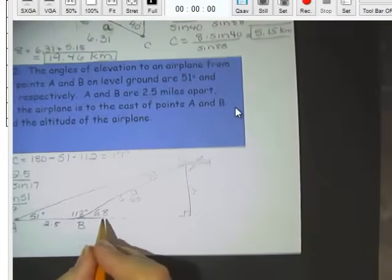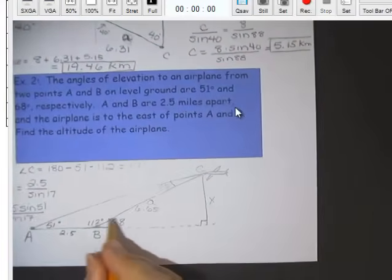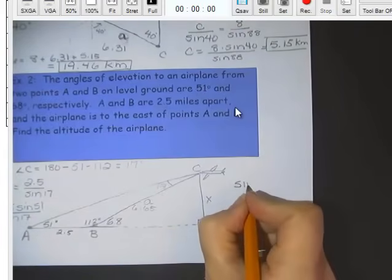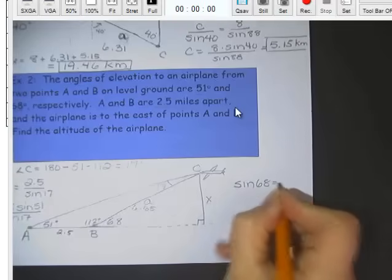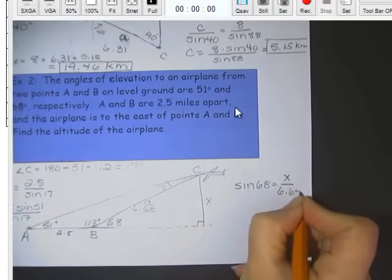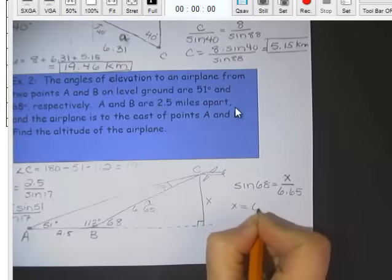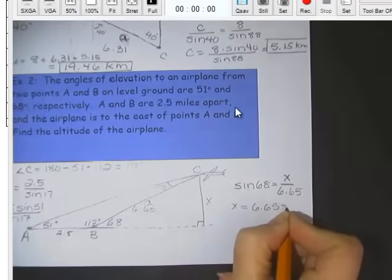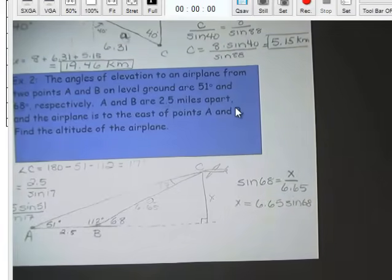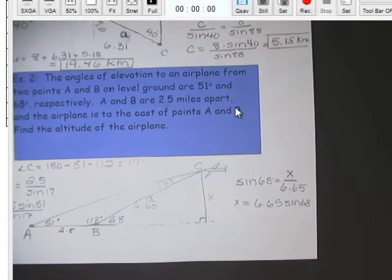So here we have to know that the sine of 68 equals opposite X over hypotenuse, 6.65. So X equals 6.65 times the sine of 68. And we punch that in our calculator. And I come out with the altitude is 6.17 miles.